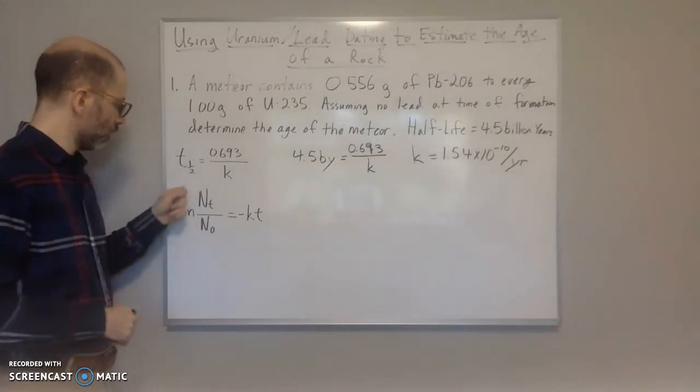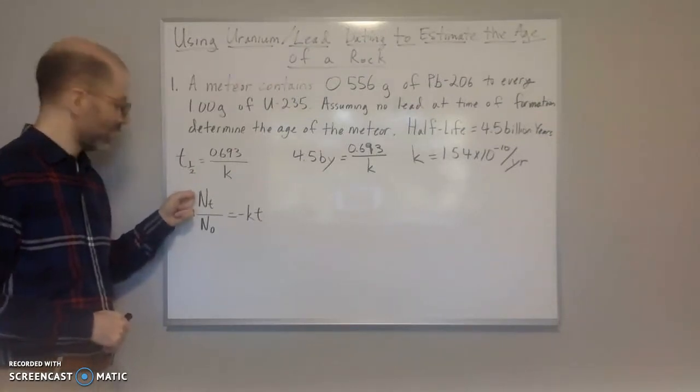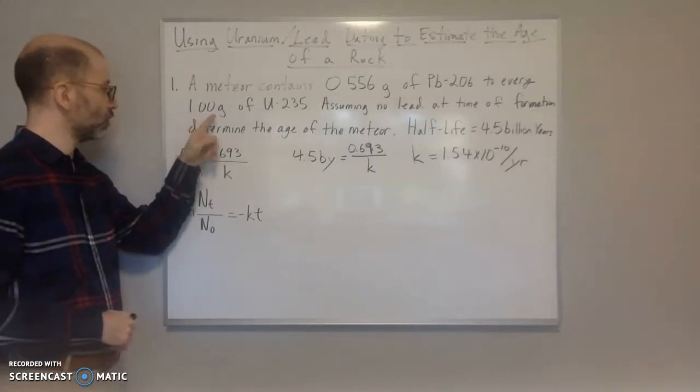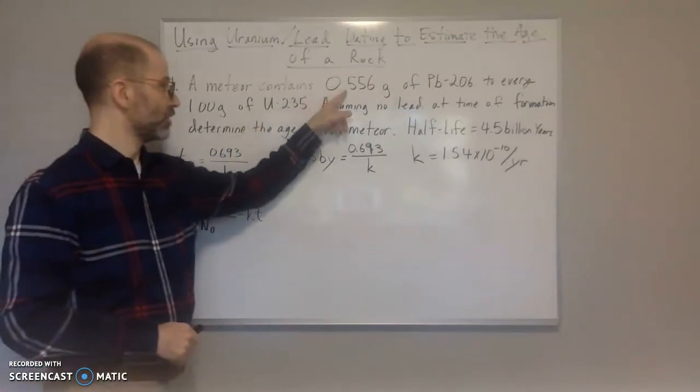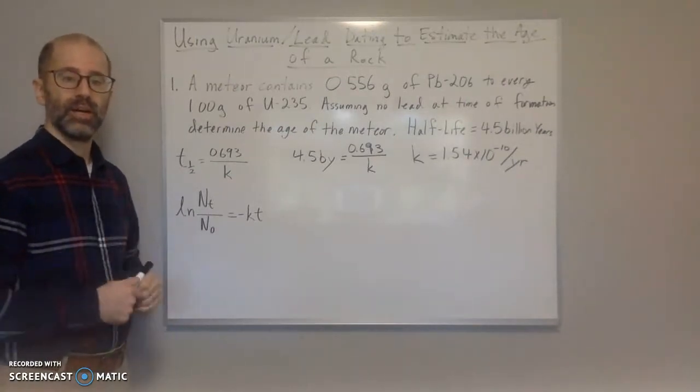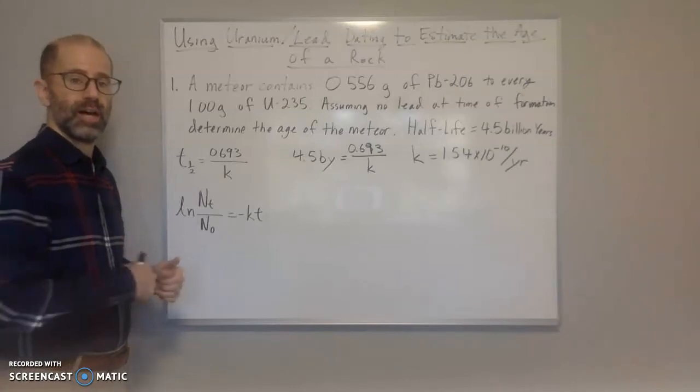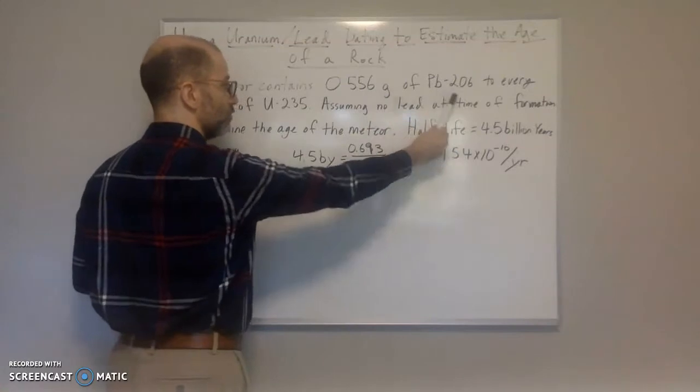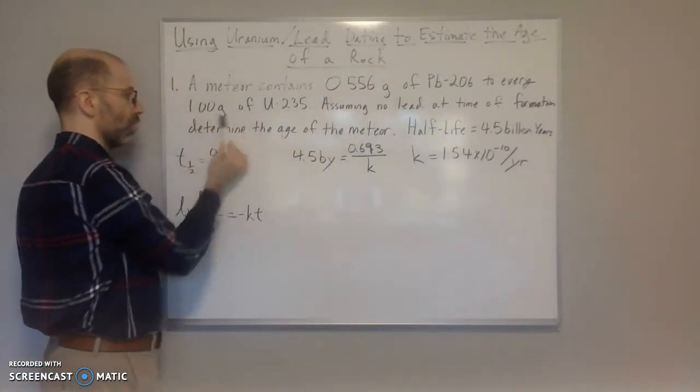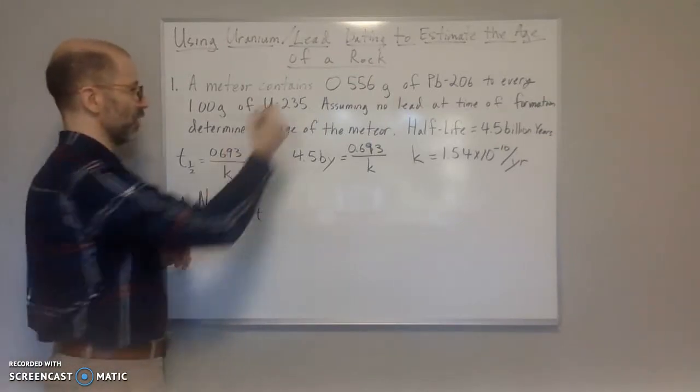We can use k here, but we also need the ratio of the amount of uranium that we have left and the amount of uranium that we began with. All we know right now is we have 1.00 grams of uranium for every 0.56 grams of lead. So we need the original amount of uranium.